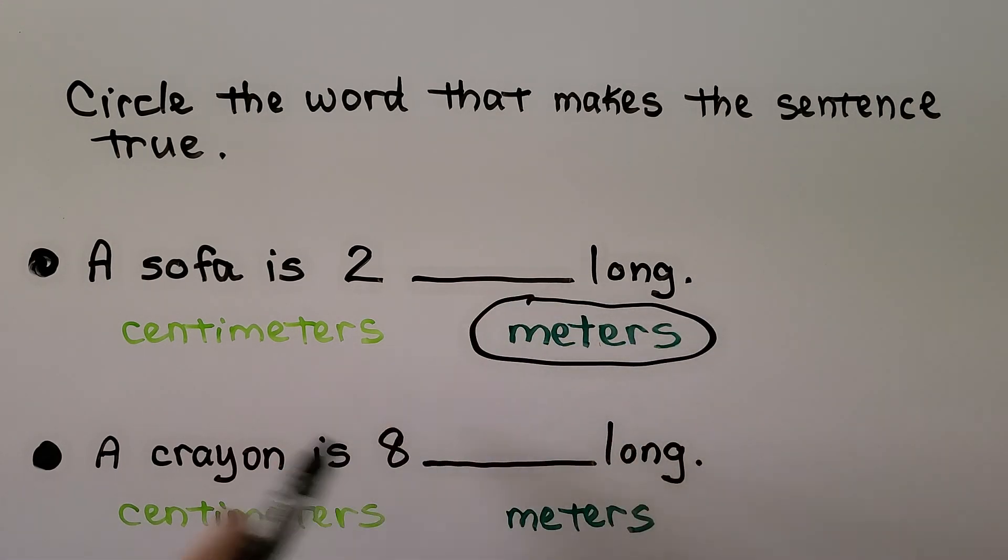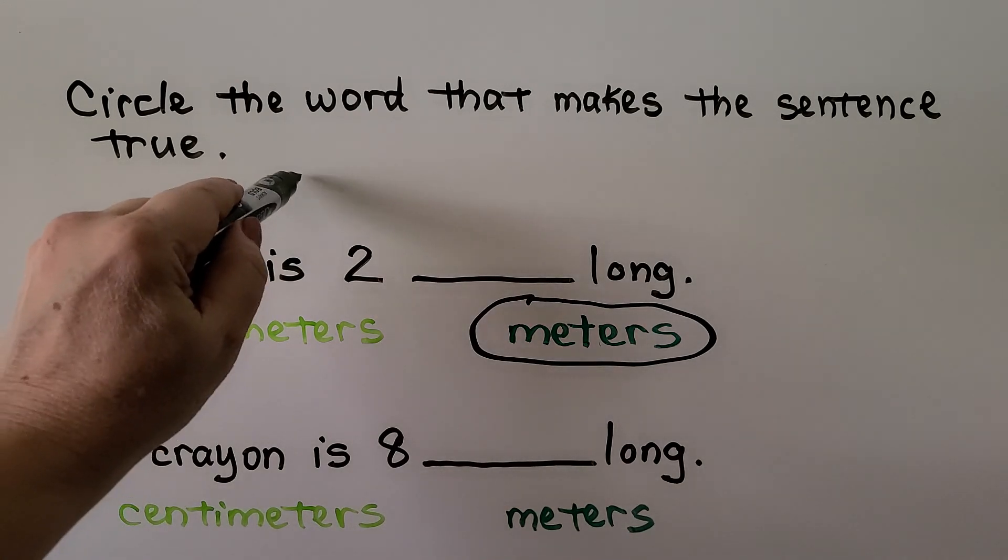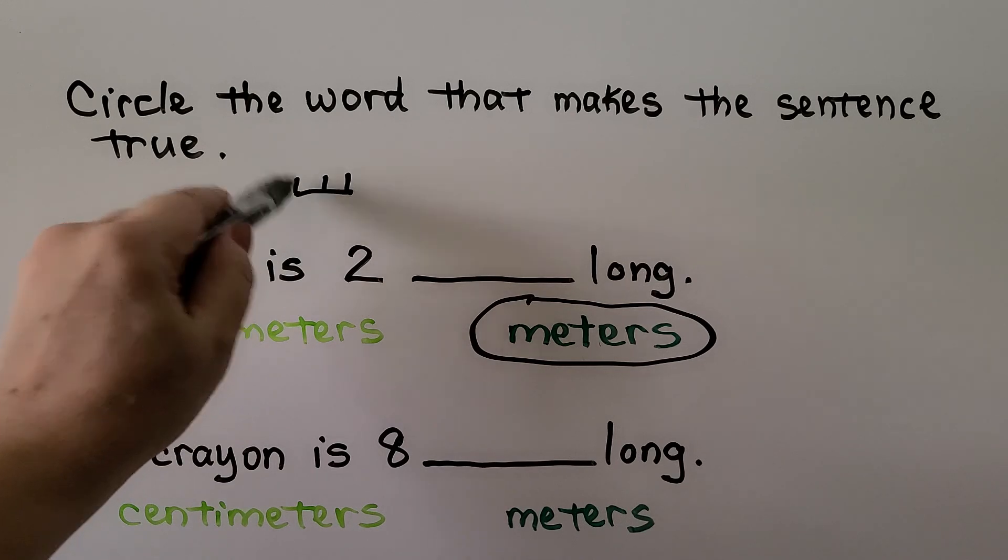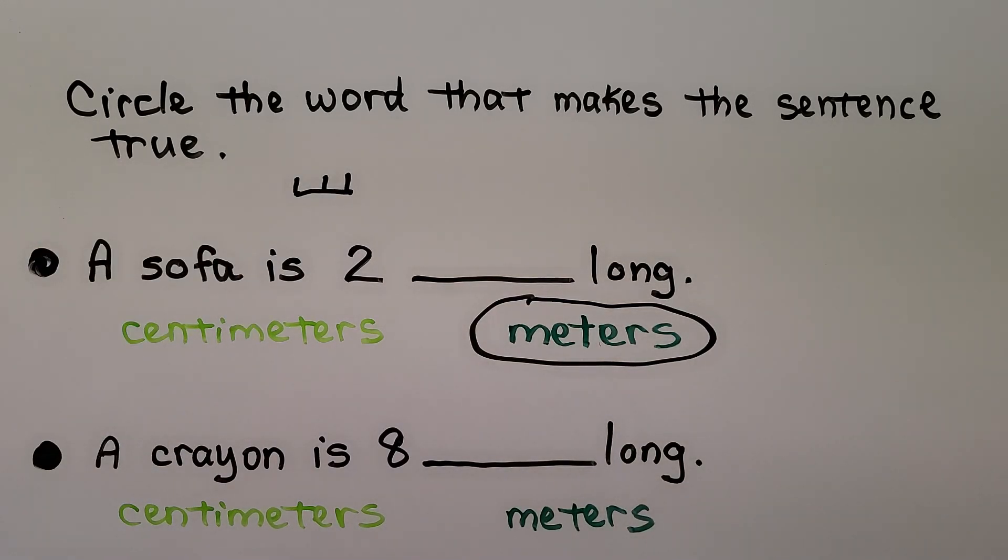If the sofa was two centimeters, that means the sofa would be about this long. I don't think anyone could sit on a sofa that size. This one says a crayon is eight. Is it centimeters or meters long? Do you remember how big my meter stick was compared to the little centimeter?